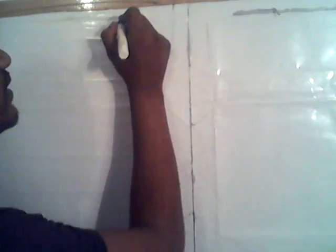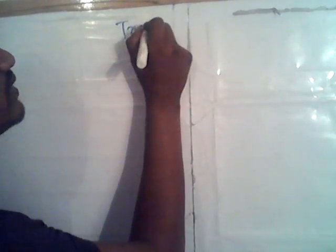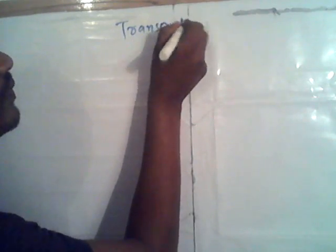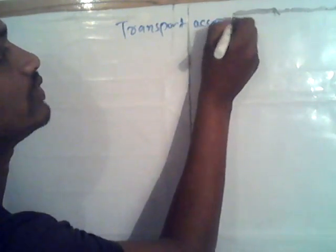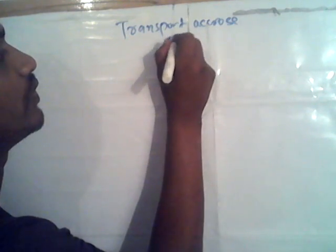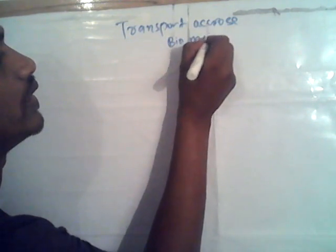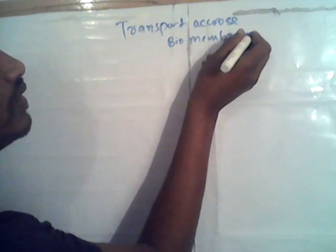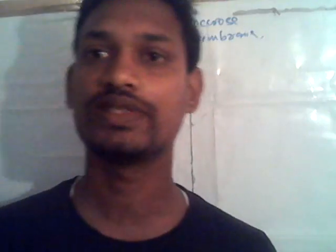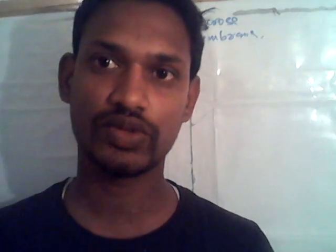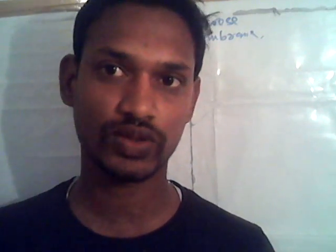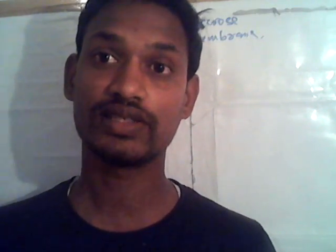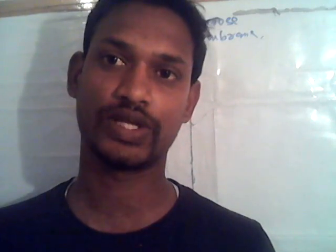Today's topic is transport across the bio-membrane. As you know, there is prokaryotic and eukaryotic. Prokaryotic means an organism which does not have a nucleus, and eukaryotic means an organism which is well-developed, and cell organelles are also present.